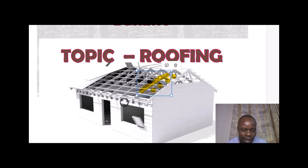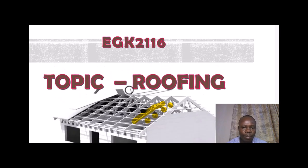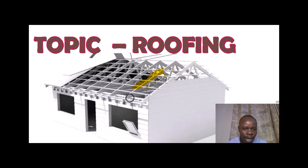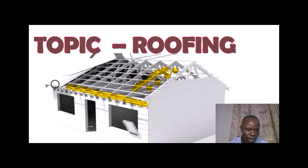The wall plate is the one that is in direct contact with either the three courses on the wall above the ring beam, or it can also be lying directly on the ring beam. It runs in the same direction as the purlins. The wall plate is running there — I hope that was clear.